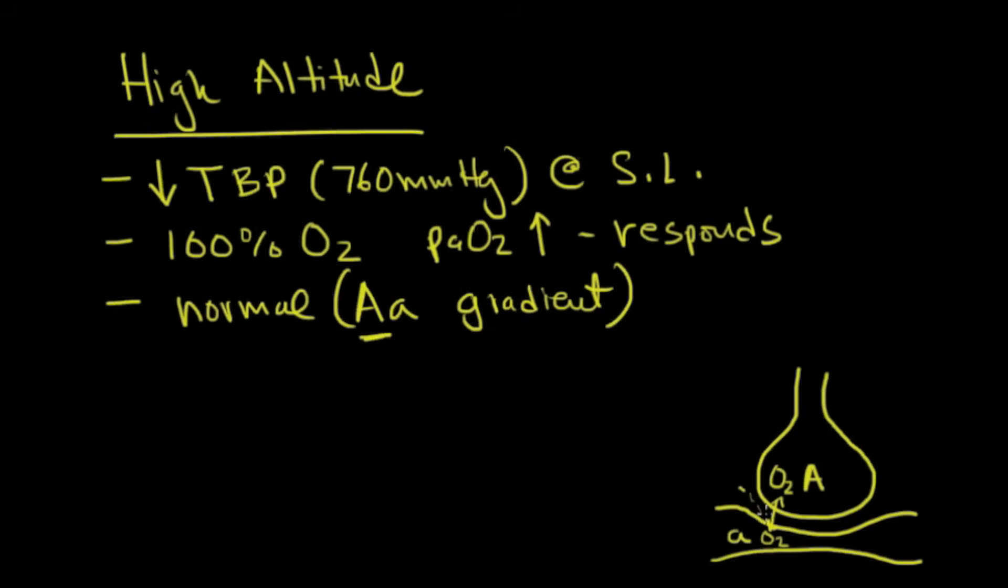And so if there's a big difference between these two, that must mean there's something going on here or there's a barrier or there's something that's preventing this oxygen from fully oxygenating the capillary. In this case, there isn't. It's simply a result of a low barometric pressure and as a result of that, the AA gradient is normal.